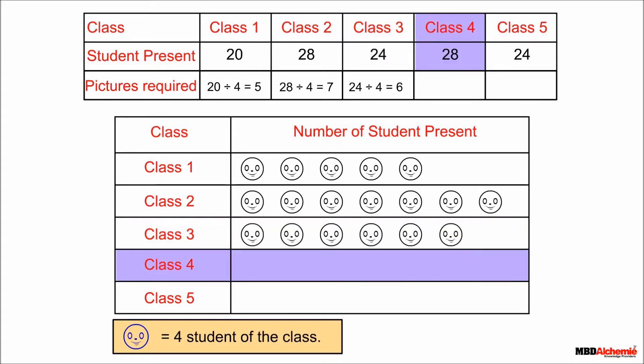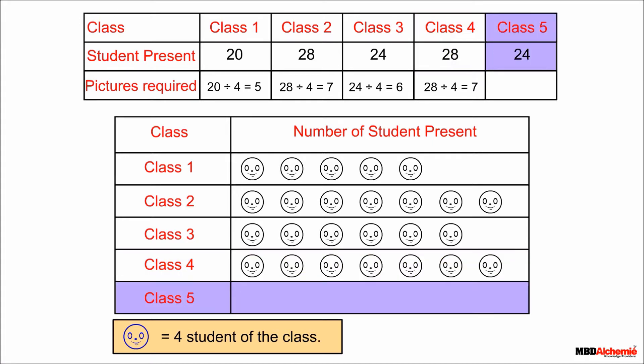The number of present students in class 4 is 28. On dividing 28 by 4, we get 7, so we draw 7 pictures for class 4. The number of present students in class 5 is 24. On dividing 24 by 4, we get 6, so we draw 6 pictures for class 5.